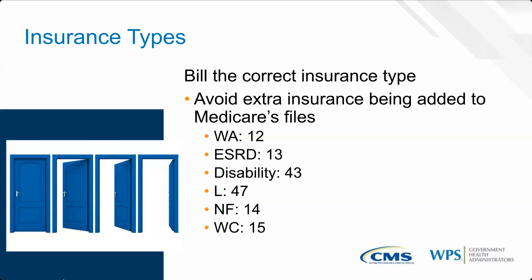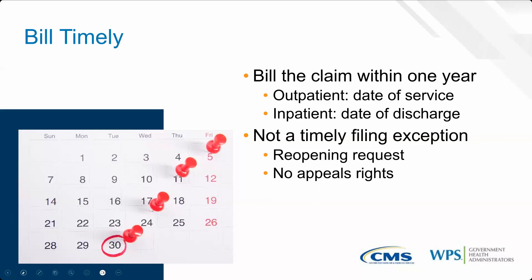Billing timely: you need to bill on time, using the date-of-service one-year rule for outpatient, and date-of-discharge one-year rule for inpatient. Even if the primary paid in full, we cannot waive timely filing. You can, however, have a claim denied, filed timely, and do a reopening request to look at it — not an appeal, a reopening, which gives you one year from the denial date, which is longer than the 120-day appeal deadline.